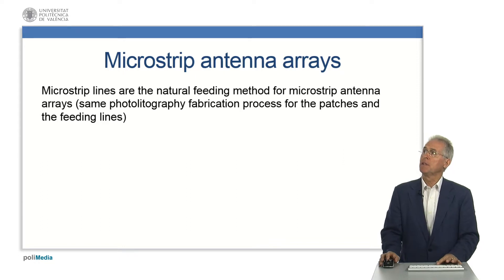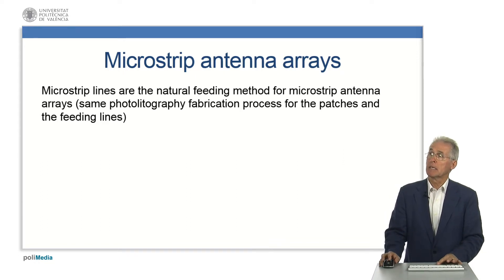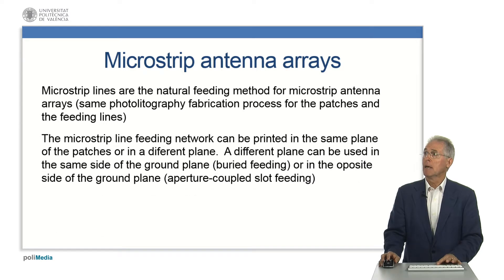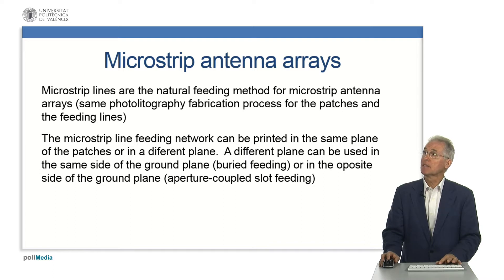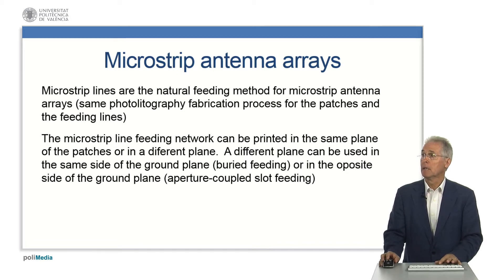Microstrip lines are the natural feeding method for microstrip antenna arrays. We use the same photolithography fabrication process for the patches and the feeding lines. The microstrip line feeding network can be printed in the same plane of the patches, or in a different plane. A different plane can be used on the same side of the ground plane, as in buried feed, or on the opposite side of the ground plane, as in aperture-coupled slot feeding.